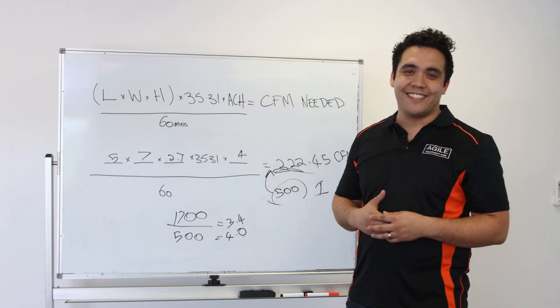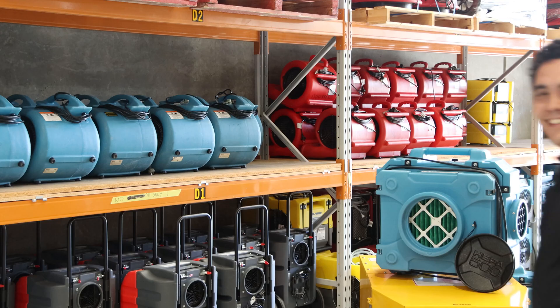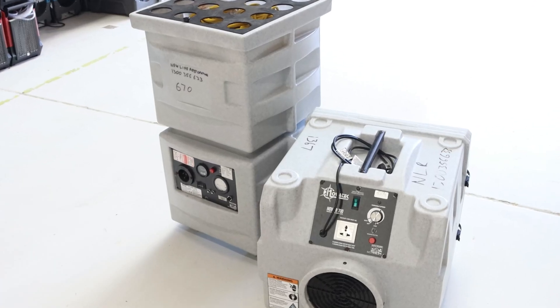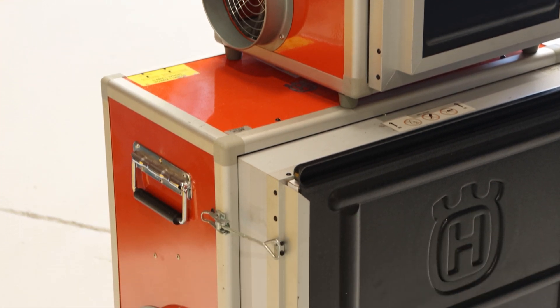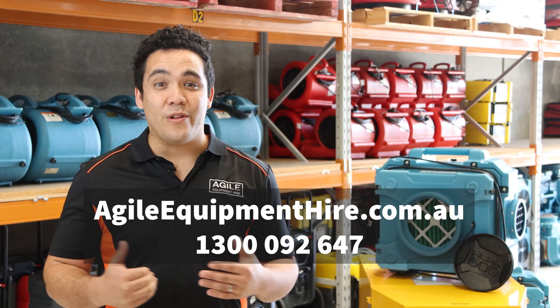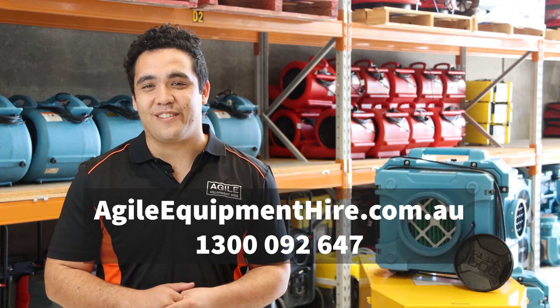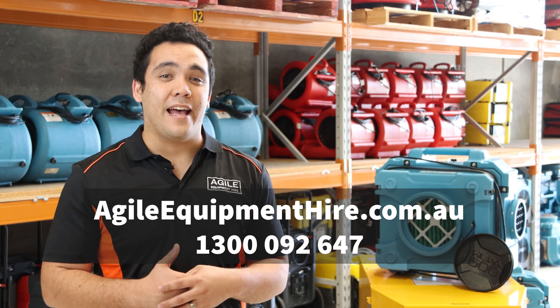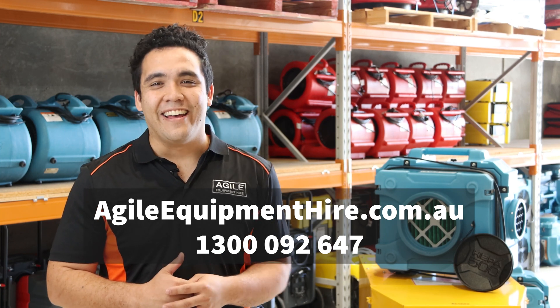So now back to the warehouse. Here at Agile Equipment Hire, we have a diverse variety of HEPA filtration units available. These vary in CFM from small units up to large 2000 CFM units. If you require HEPA filtration, call us on 1300 092 647 or visit our website at agileequipmenthire.com.au. Thank you. Have a great day.